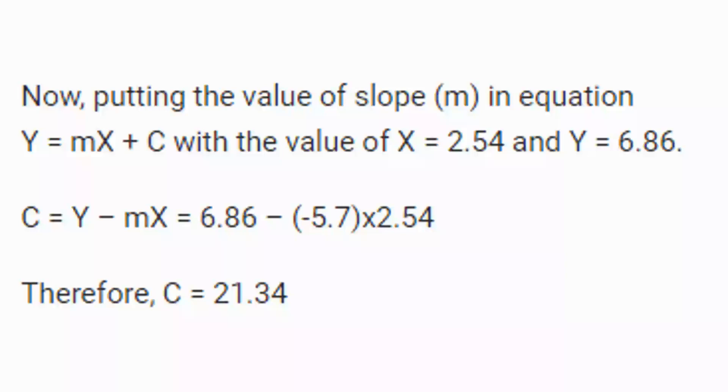Now, again, we have to calculate the value of constant. For that, let's put the value of slope, that is minus 5.7, in equation y equals mx plus c, where let's keep the value of x equals 2.54 and y equals 6.86, that is voltage and pH of buffer solution of phosphate. Now, we know that c equals y minus mx. As we had already calculated, slope is a negative quantity. Thus, the minus of slope and this minus in the equation become positive. Thus, the value of c equals 21.34. These are the values we need in our software code for calculating pH value of water-based solutions.